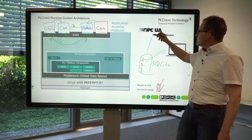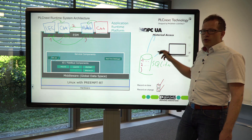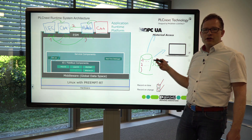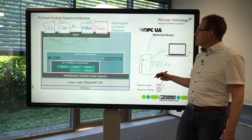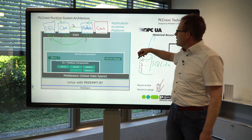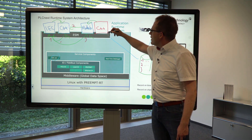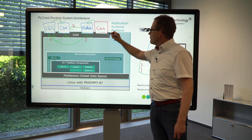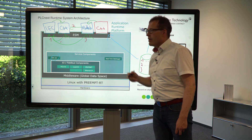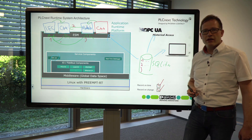You can get the historical values to an OPC UA historical client, or you can just query the values from your application in a very simple way.